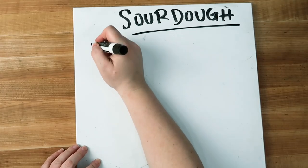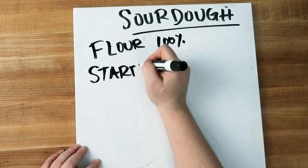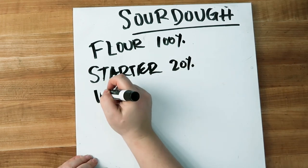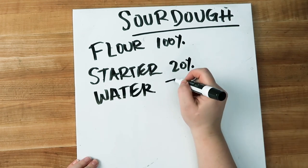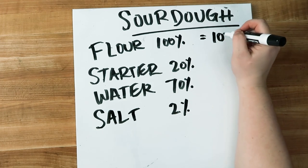I want to do one more example for sourdough bakers because there is something else to keep in mind when people talk about the hydration of a loaf. When people talk about hydration in bread dough they are talking about the amount of water in the dough in relation to the flour. However, when you're baking with sourdough, the amount of water that actually goes into the recipe is not the same as the hydration percentage, because you also need to calculate the water from the starter. Here we have a standard sourdough formula: flour at 100 percent, starter at 20 percent, water at 70 percent, and salt at 2 percent.